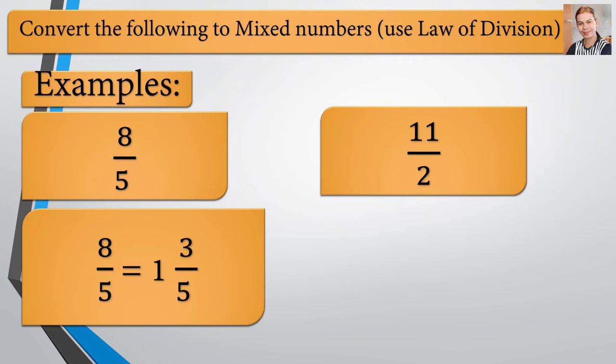Sana na-follow nyo yung proseso natin kung papaano natin i-convert yung fraction into mixed number. 3 is our remainder and we have our denominator is 5, and of course, 1 there is the whole number coming from 8 over 5.